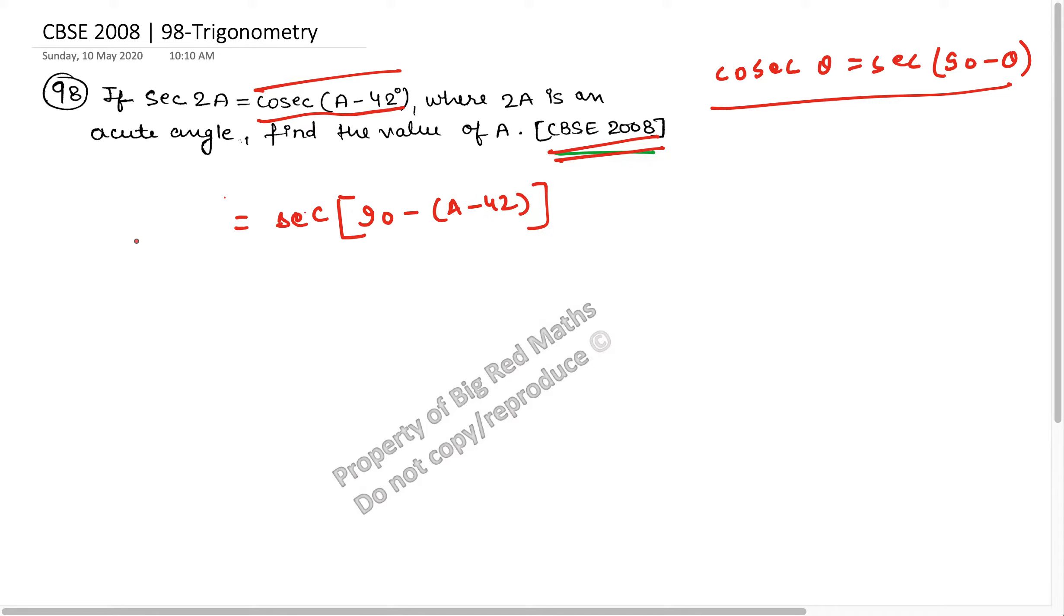So sec 2A remains as it is. Sec 2A is equal to this. Now what happens is that I can cancel sec and sec from here, and equate 2A with this term.